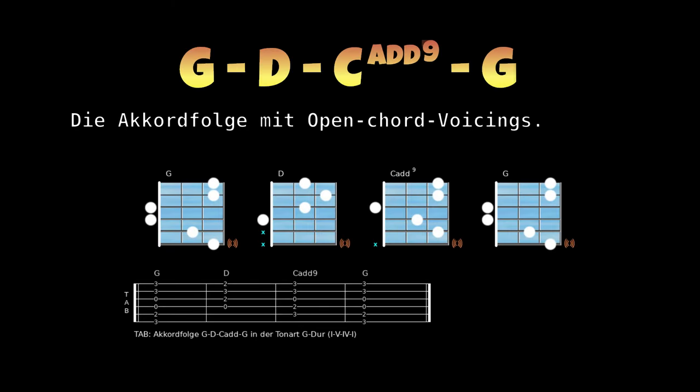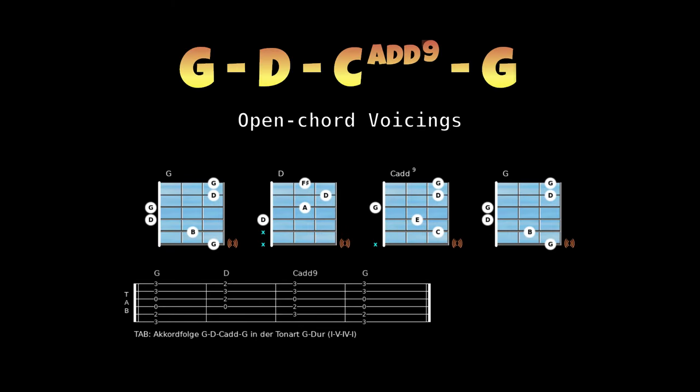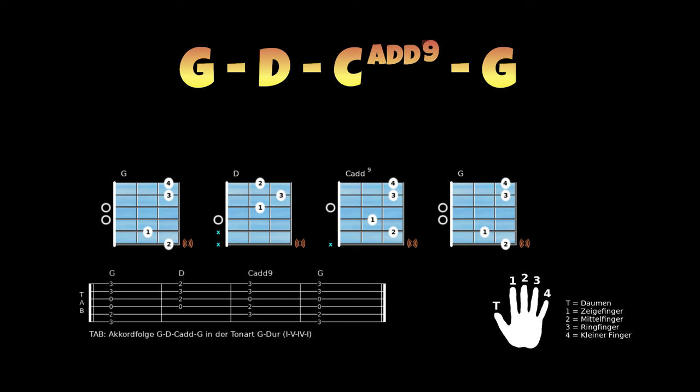Hier ist die Akkordfolge mit Open Chord Voicings abgebildet. Hier siehst du die Intervalle – sie beziehen sich immer auf den Grundton des jeweiligen Akkordes. Auf der Grafik ist abgebildet, mit welchen Fingern du die Akkorde greifen kannst: 1 ist der Zeigefinger, 2 ist der Mittelfinger, 3 ist der Ringfinger und 4 ist der kleine Finger.